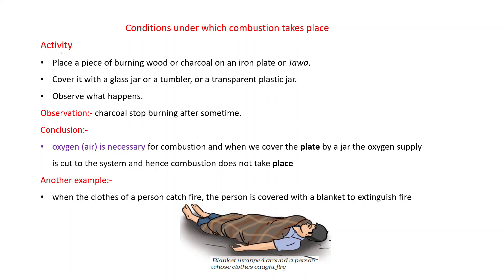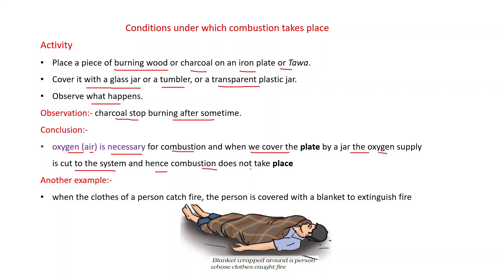Now see some more activity. Place a piece of burning wood or charcoal on an iron plate. Cover it with a glass jar or a tumbler or a transparent plastic jar, then observe what happens. We observe that the charcoal stops burning after some time. We conclude that oxygen or air is necessary for combustion, and when we cover the plate with a jar the oxygen supply is cut and hence combustion does not take place. Another example: when the clothes of a person catch fire, the person is covered with a blanket to extinguish the fire.